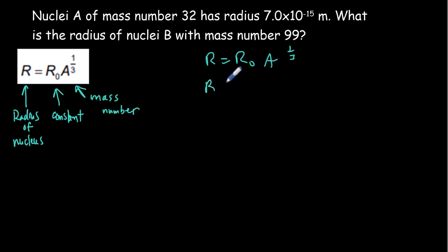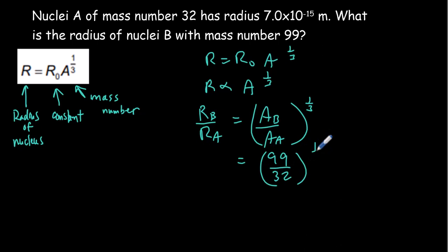Okay, so what we can say here is that R is proportional to, and we can eliminate R0 because that's a constant. It's proportional to A to the 1/3 power, which means that R of B all over R of A must be equal to A of B all over A of A to the 1/3 power. A of B, the mass number of B is 99, mass number of A is 32, raise that to the 1/3, and RB is what we're solving for. RA is equal to 7.0 times 10 to the minus 15. So we can solve, and we should get that RB is about 1.0 times 10 to the minus 14 meters. So easy problem to do if you understand ratio proportionality equations. You don't even need to know the physics.